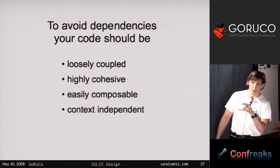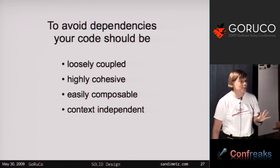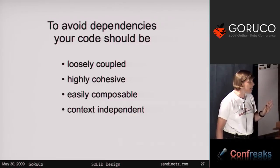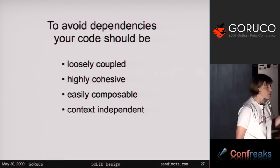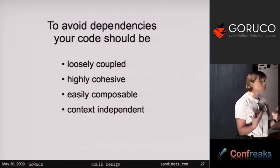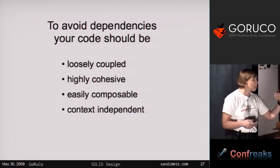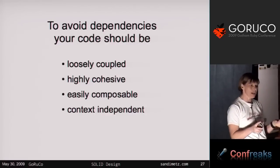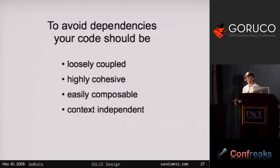These words from Steve Freeman and Nat Price are just another way of describing the same goal. They say your code should be loosely coupled, highly cohesive, easily composable, and context-independent. These are different ways of saying the SOLID design principles. Loosely coupled is about dependency injection. Highly cohesive says a class should all be about the same thing — single responsibility. Easily composable and context-independent means your app should be made up of context-independent objects that you can rearrange to get new behavior without changing the actual code.